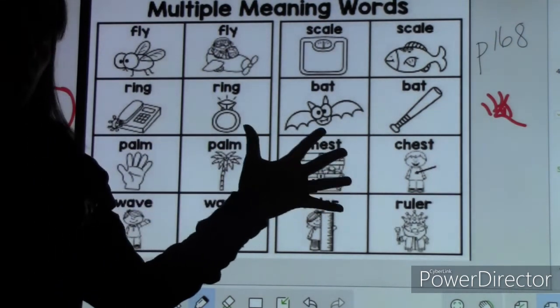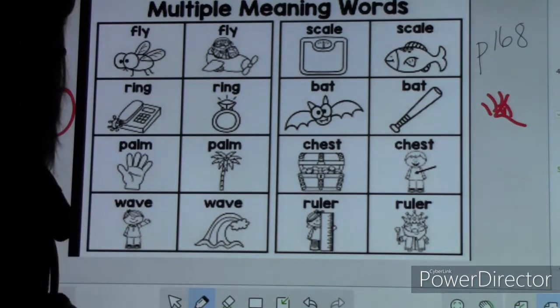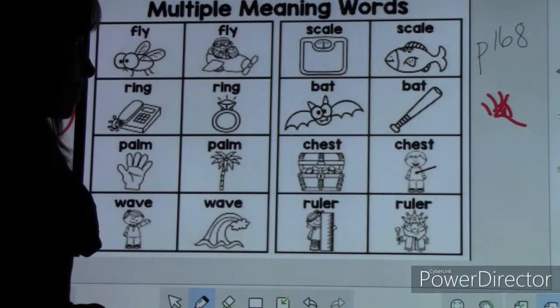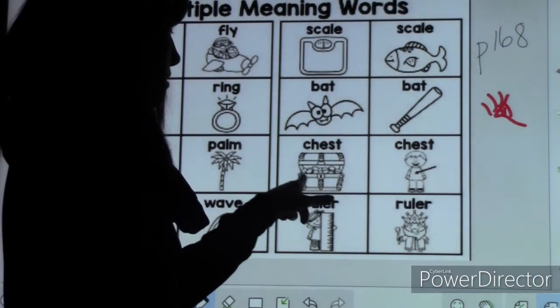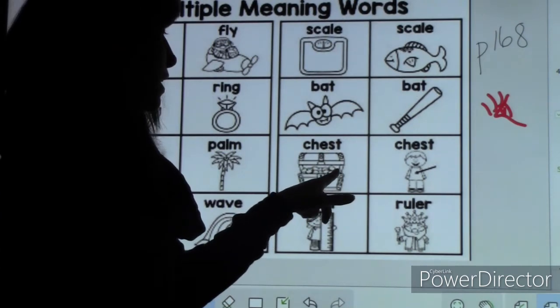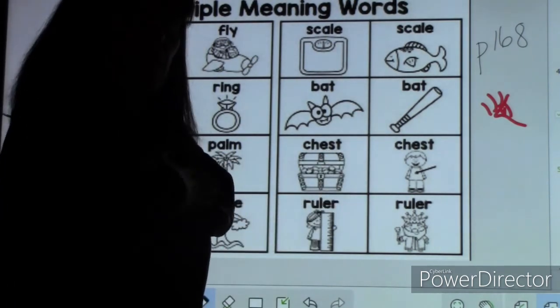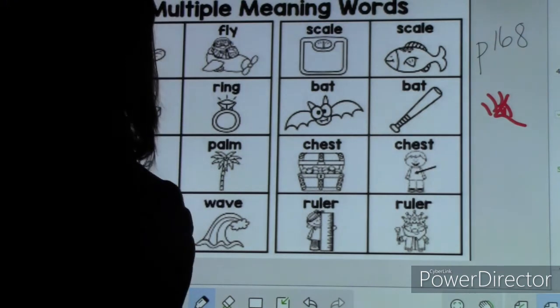There's palm, like the palm of your hand, and palm like a palm tree. There's chest, like a chest with gold and silver in it. And there's chest, like the front of your body is your chest.